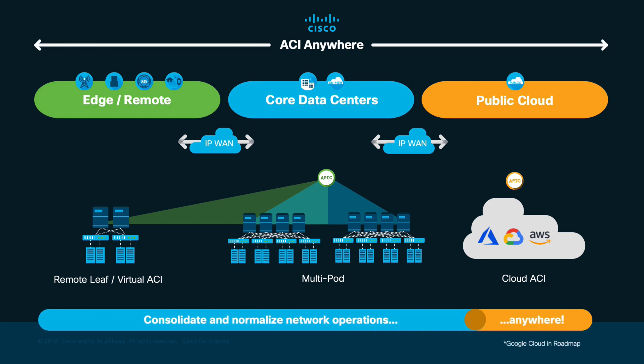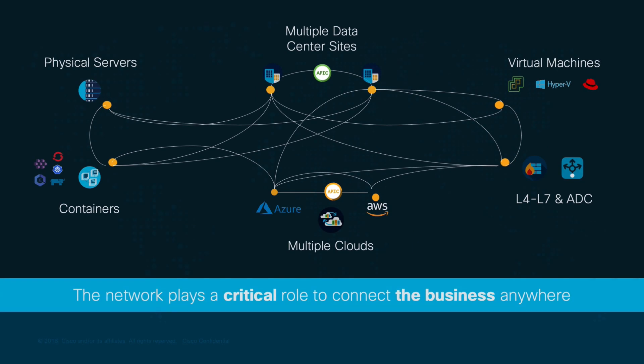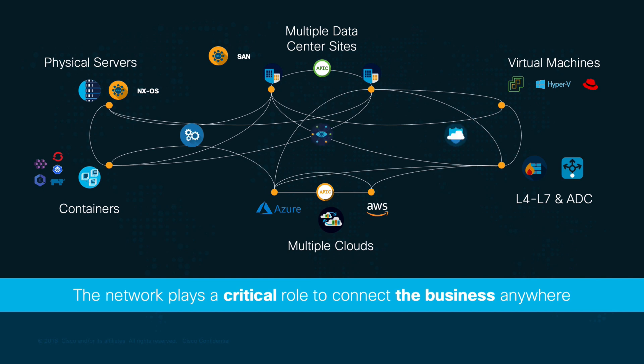However, there may be other types of networks in your data center and cloud environments, such as NXOS-based ones, SAN, and many others, which may not only need consistent management, but also automated interconnect capabilities across sites, and smart analytics and correlation to prevent potential network outages.